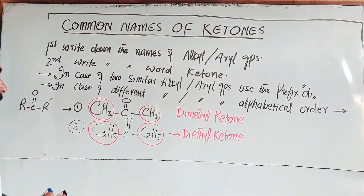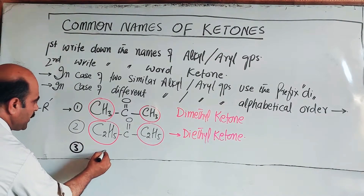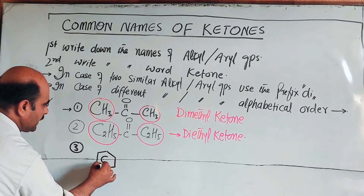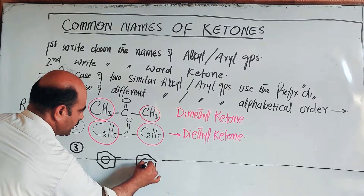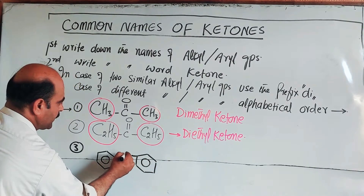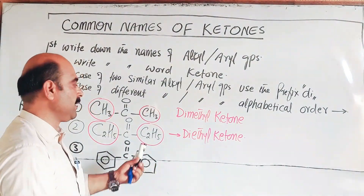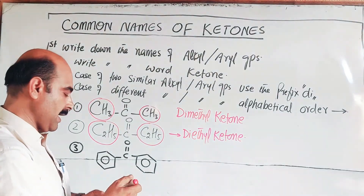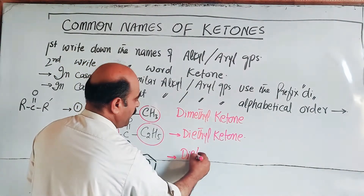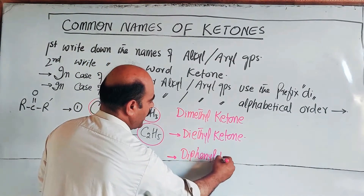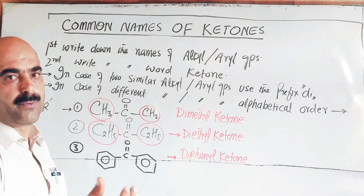Example number three is the aromatic example - phenyl ketone. Benzene minus one hydrogen gives the phenyl group, C6H5. So we have C6H5-CO-C6H5: two phenyl groups on either side. Two similar aryl groups, so we use 'di', giving the name diphenyl ketone.